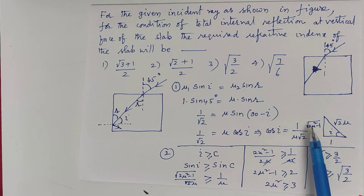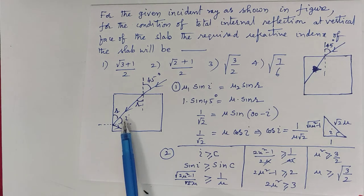But if you want to have total internal reflection at the vertical surface, i must be greater than or equal to c.